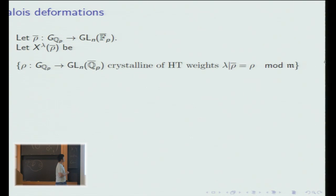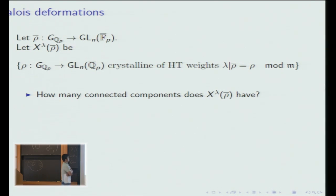That's all I wanted to say about cohomology. Complex geometers often just forget the variety and work with the Hodge structure, and number theorists often do the same thing with Galois representations. We're gonna forget X from now on and look at deformations of the Galois representation. ρ̄ will be a mod p Galois representation of the absolute Galois group of Q_p. I'm going to let this space X^λ(ρ̄)—this has nothing to do with the X that appeared earlier—be the space of characteristic zero Galois representations which are crystalline, have Hodge-Tate weights λ, and are congruent to ρ̄ modulo the maximal ideal.